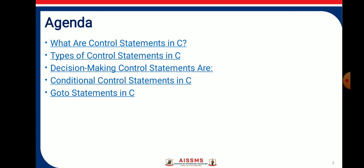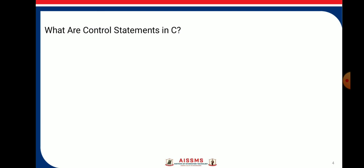First, what are control statements in C? Every statement in a computer is executed based on predefined rules, and control flow is based on logic. When we find the necessity to execute customized logic, control statements are used. A control statement block is executed if the logic is satisfied, hence they are called control statements. They determine the order in which statements are executed and direct execution under certain conditions.